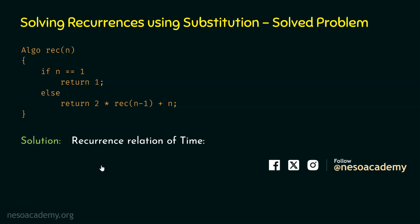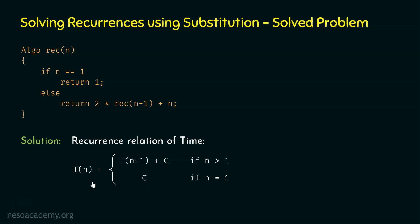Therefore, the recurrence relation of time is: T(n) = T(n-1) + C, if n > 1; and T(n) = C, if n = 1. This is the base case. If n equals 1, the time required is constant. If n is greater than 1, the else block is executed and the time required is T(n-1) + C. This is the recurrence relation of time of this algorithm. Now we need to solve it using the substitution method.